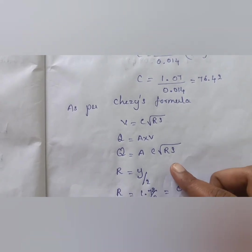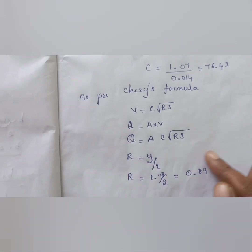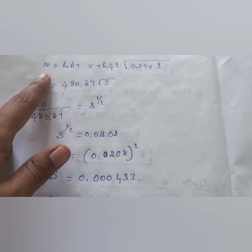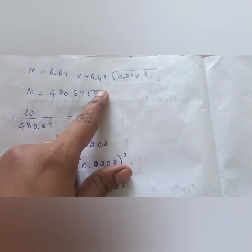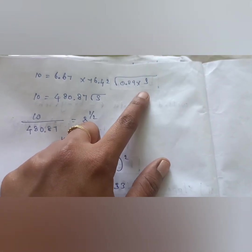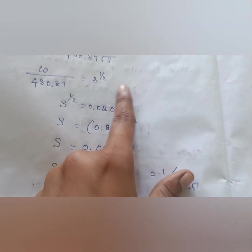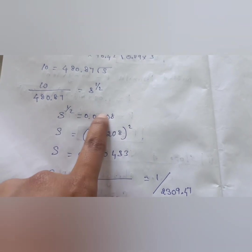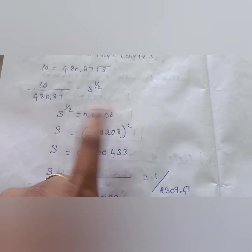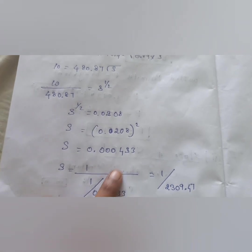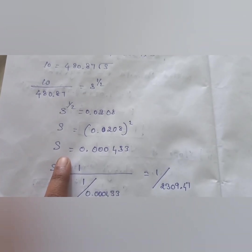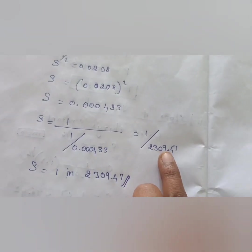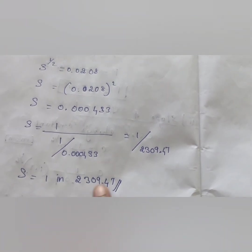For the most economical condition, R = y/2 = 1.78/2 = 0.89 m. Substituting all values into Q = A × C × √(RS): 10 = A × 76.42 × √(0.89 × S). Solving: √S = 10 / 480.87 = 0.0208, so S = 0.000433, which is equivalent to a bed slope of 1 in 2309.47.